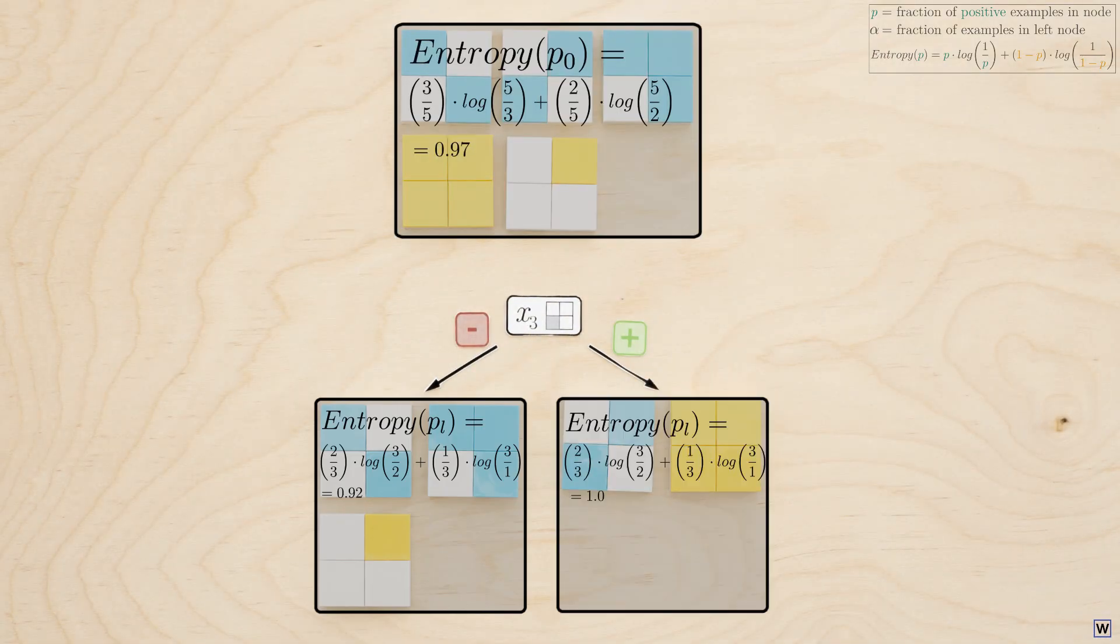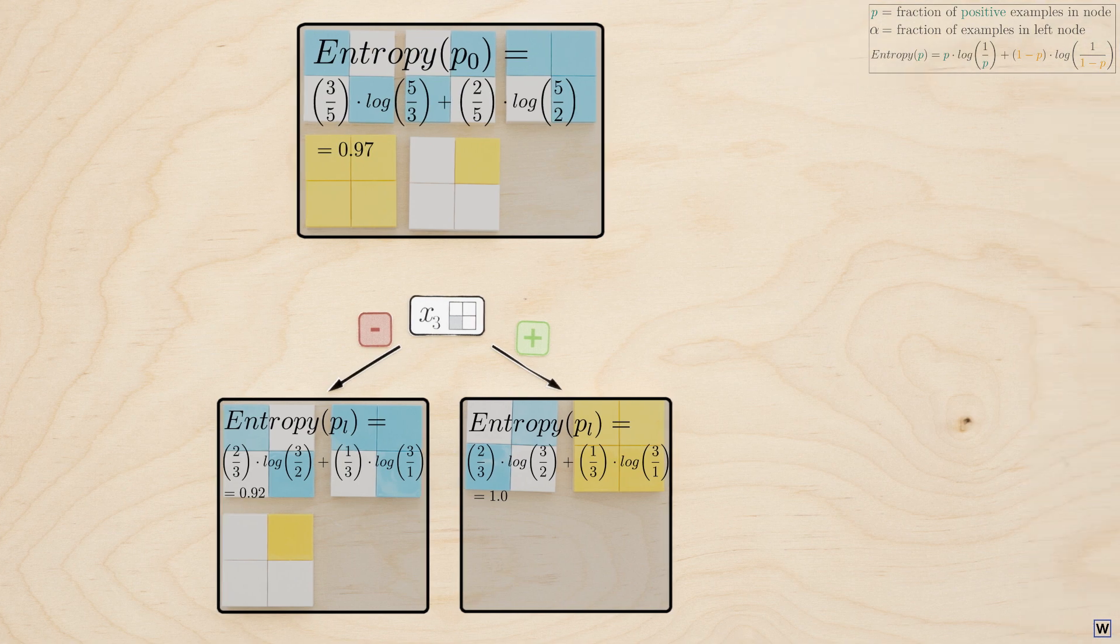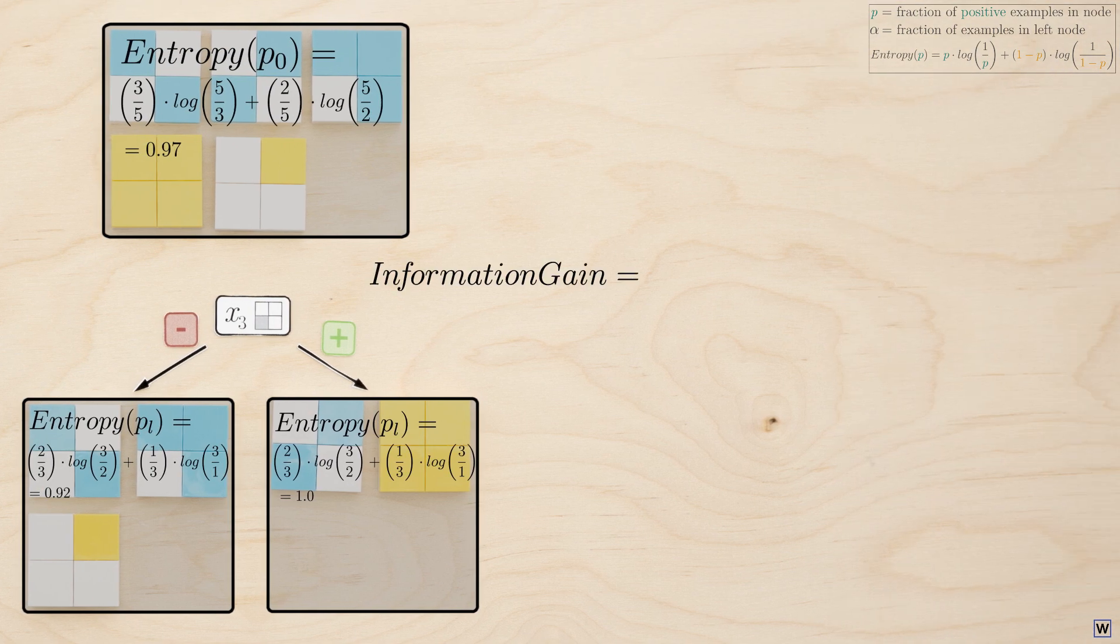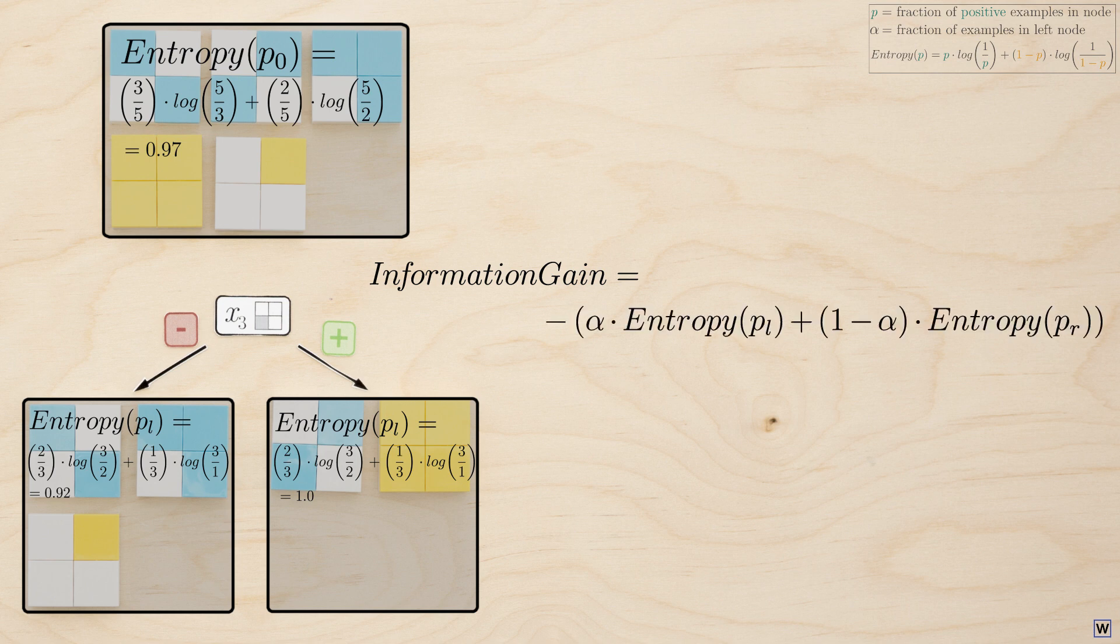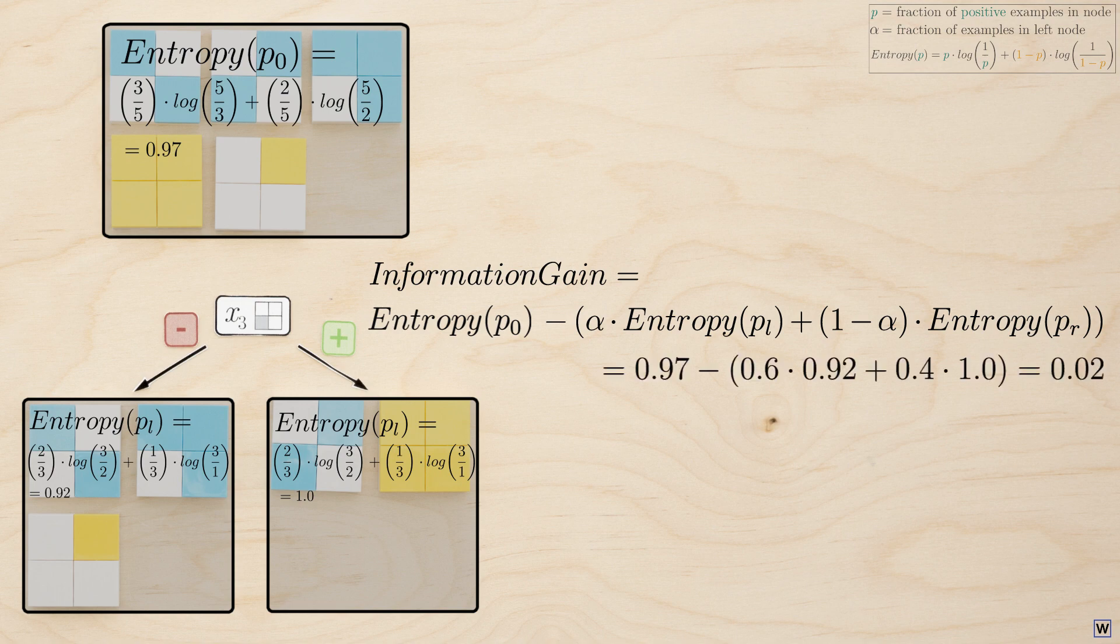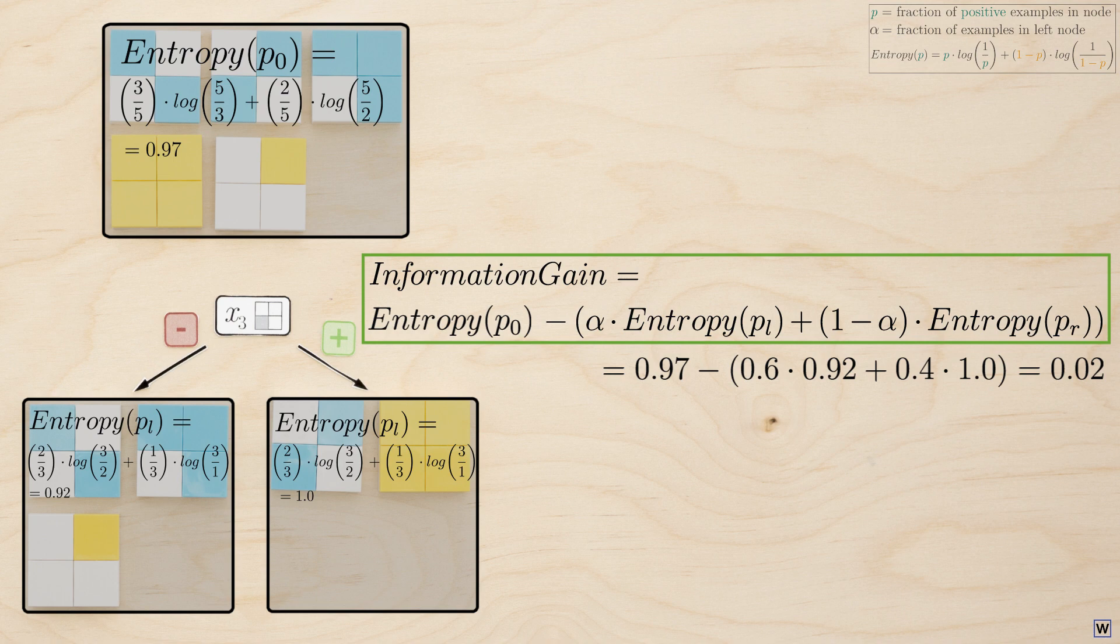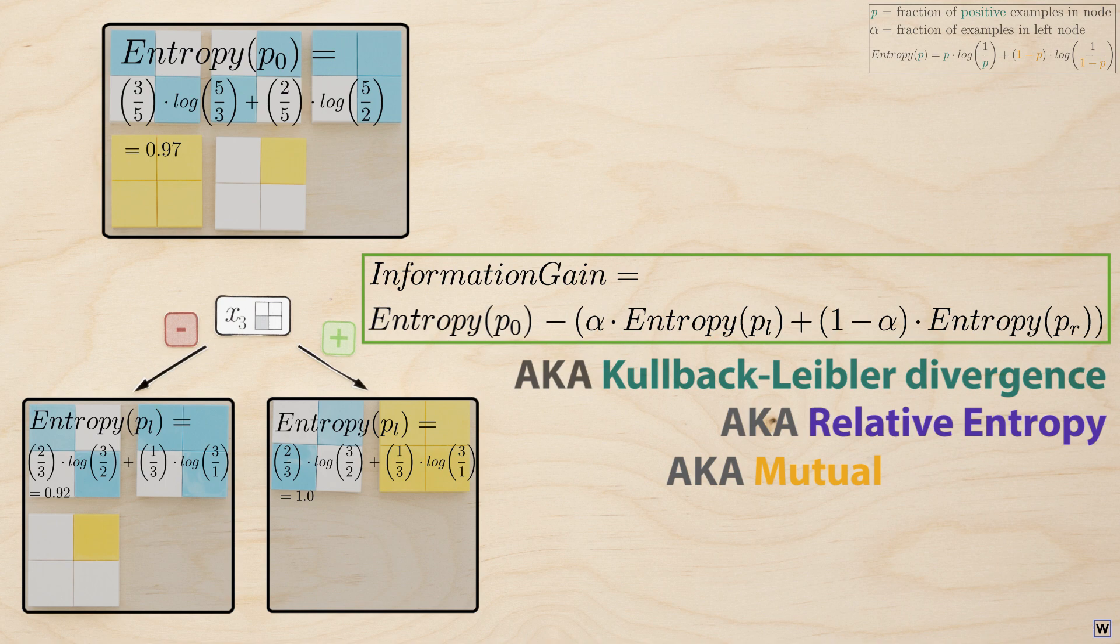Now that we have a measure of the average information content, the entropy of each node, we can measure the information gained exactly in the same fashion as we measured the decrease in node impurity. By subtracting the weighted average of our entropy after splitting from our entropy before splitting. Our new formula for the information gained turns out to have a lot in common with other problems in machine learning and information theory. And depending on how we set up our problem also shows up under the names Kullback-Leibler Divergence, Relative Entropy, and Mutual Information.